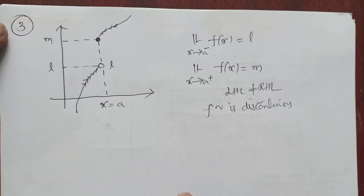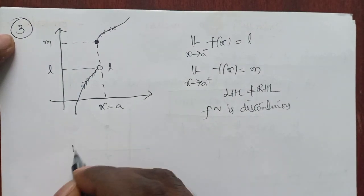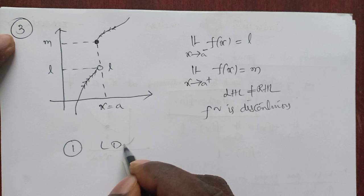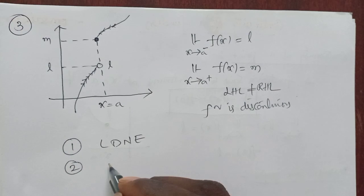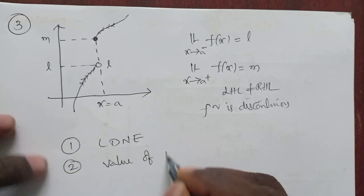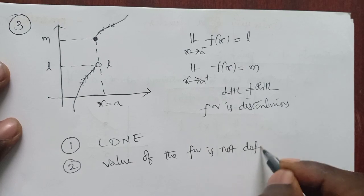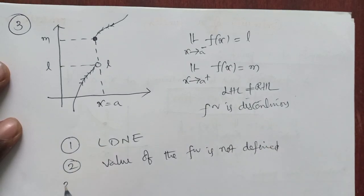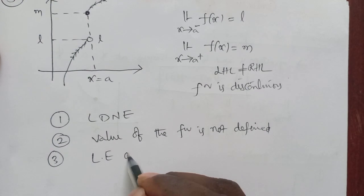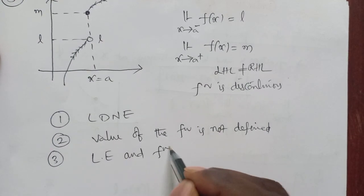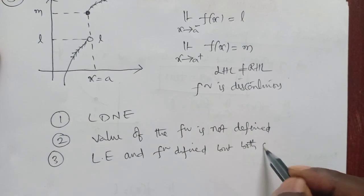The reasons for discontinuity are: first, the limit does not exist; second, the value of the function is not defined; and third, the limit exists and the function is defined but both are not equal.